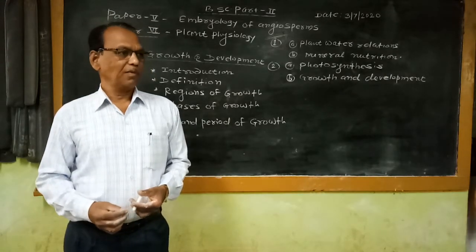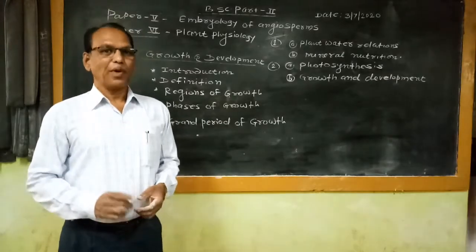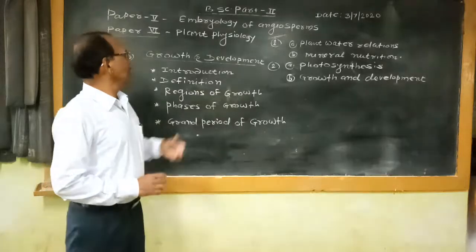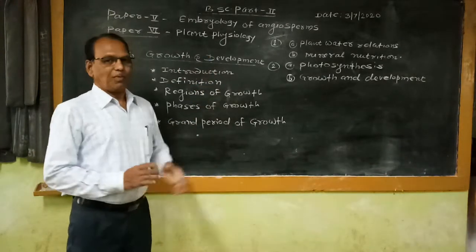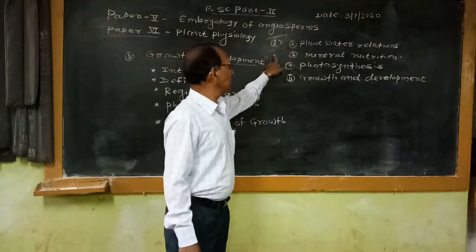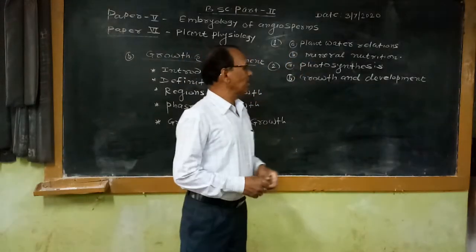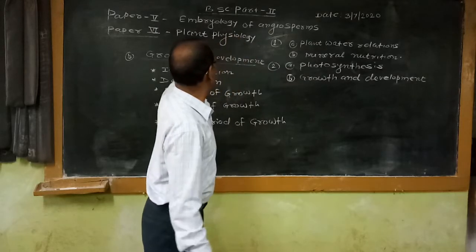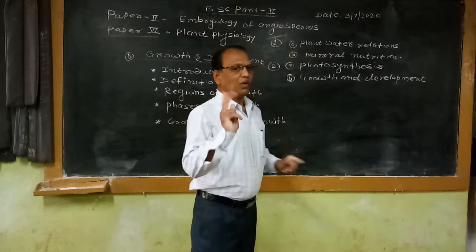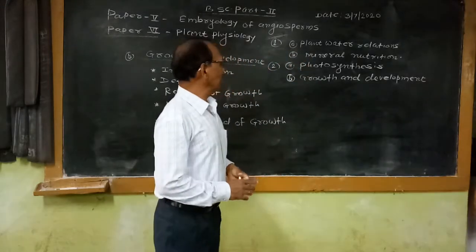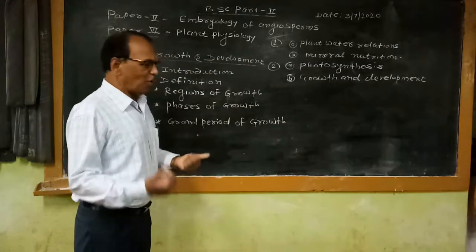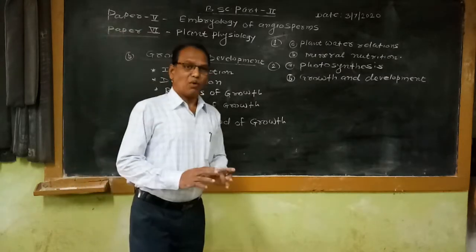As far as the syllabus of BSc Part 2 is concerned, we have two papers this year. Paper number five covers the embryology of angiosperms, and it has two major units, each with two sub-units. Paper number six is also divided into two major units. The first major unit of paper number six has two sub-units: plant water relations and mineral nutrition.